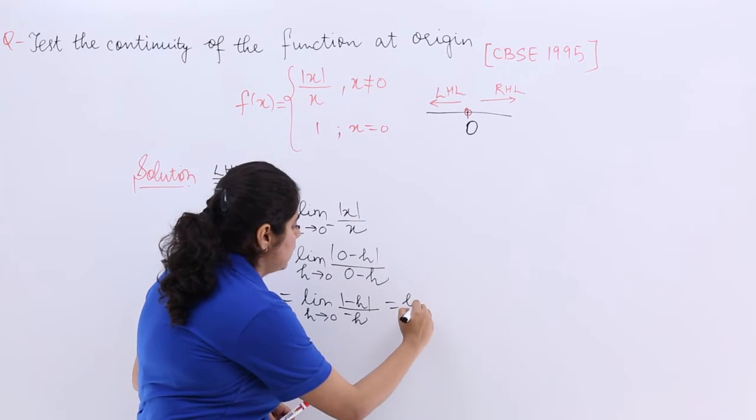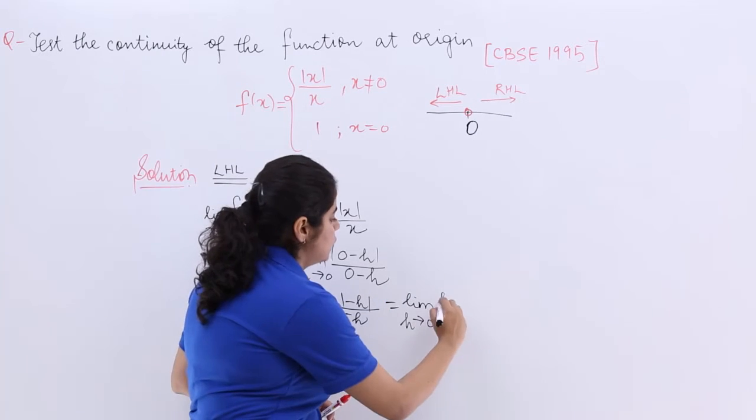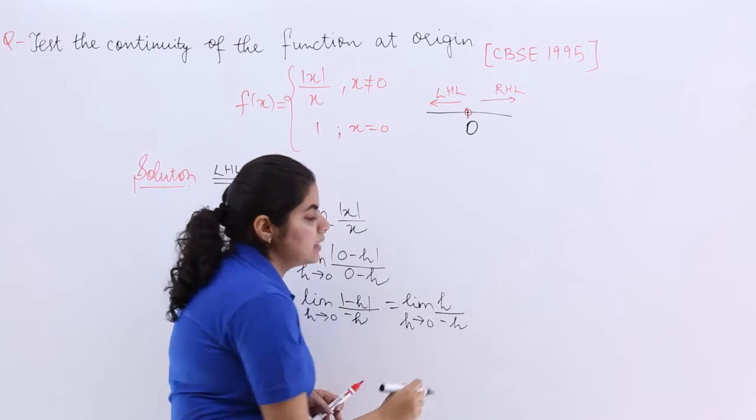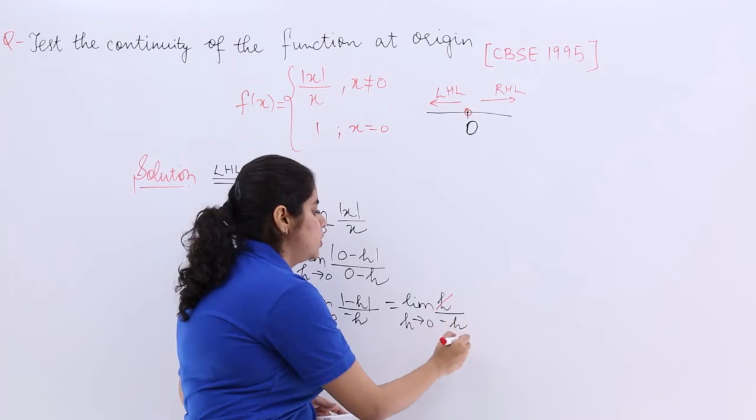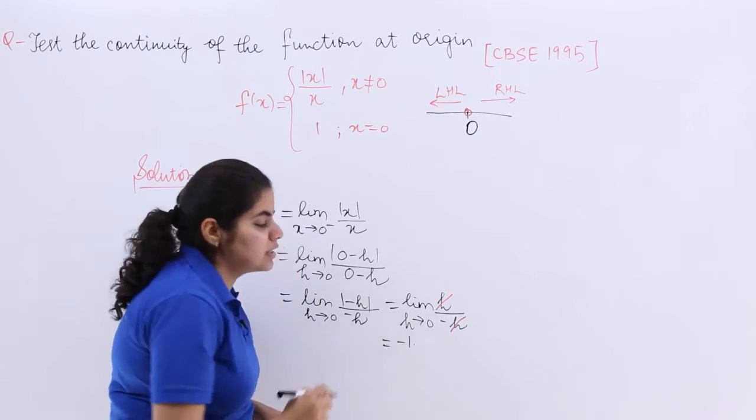So it is limit h tends to 0, minus h will become plus h upon minus h. Now h here, h here gets cancelled, minus sign is left. So it basically is minus 1. So the value of left hand limit is minus 1.